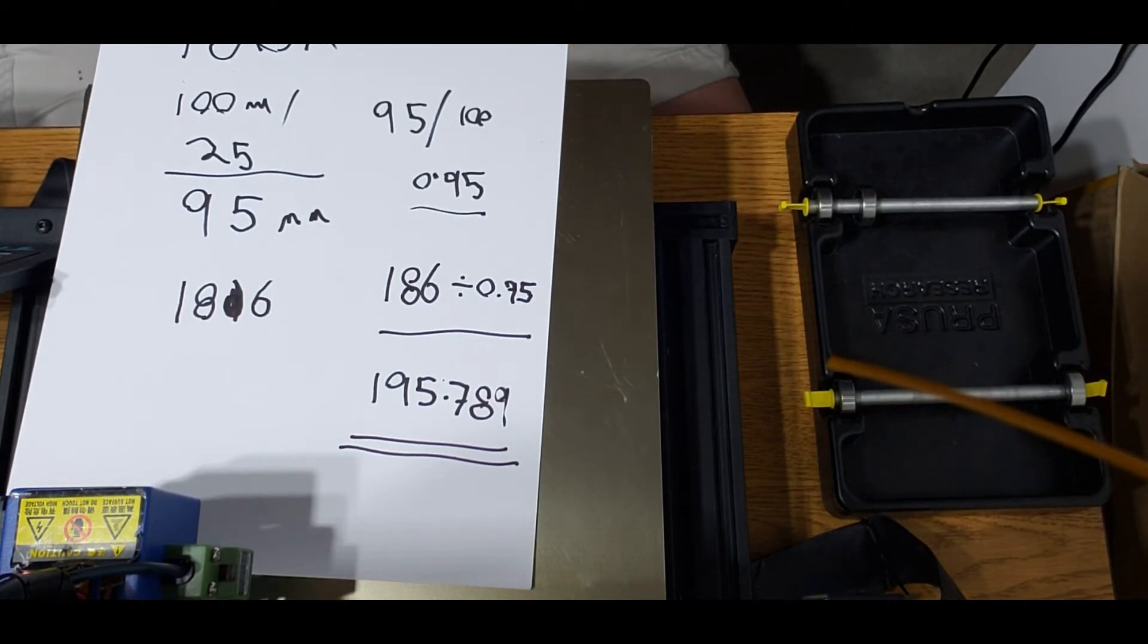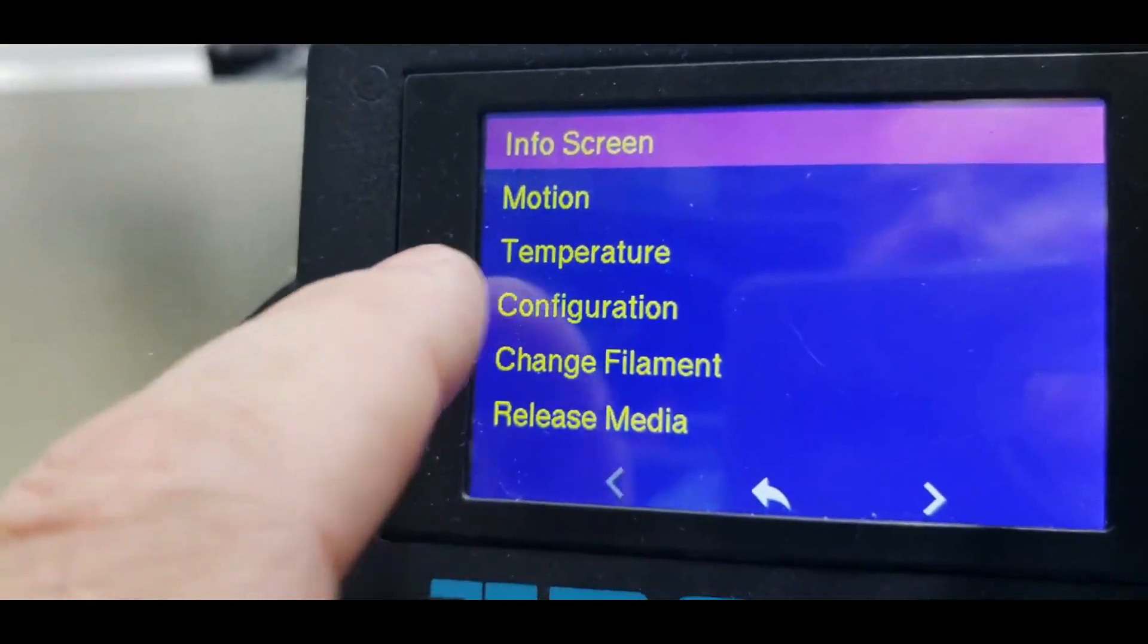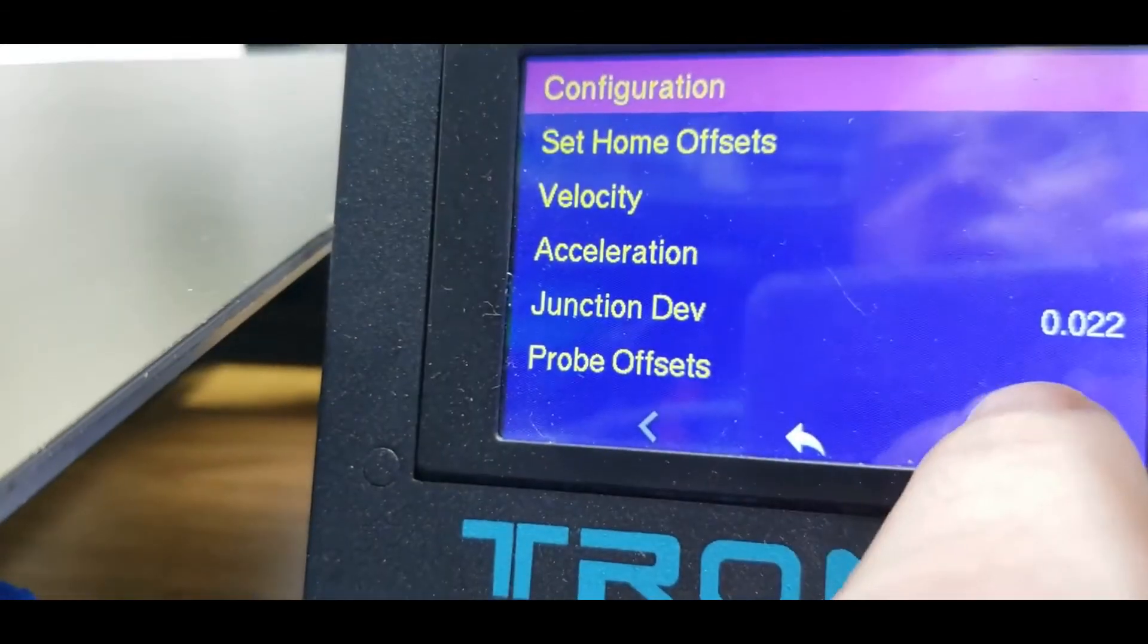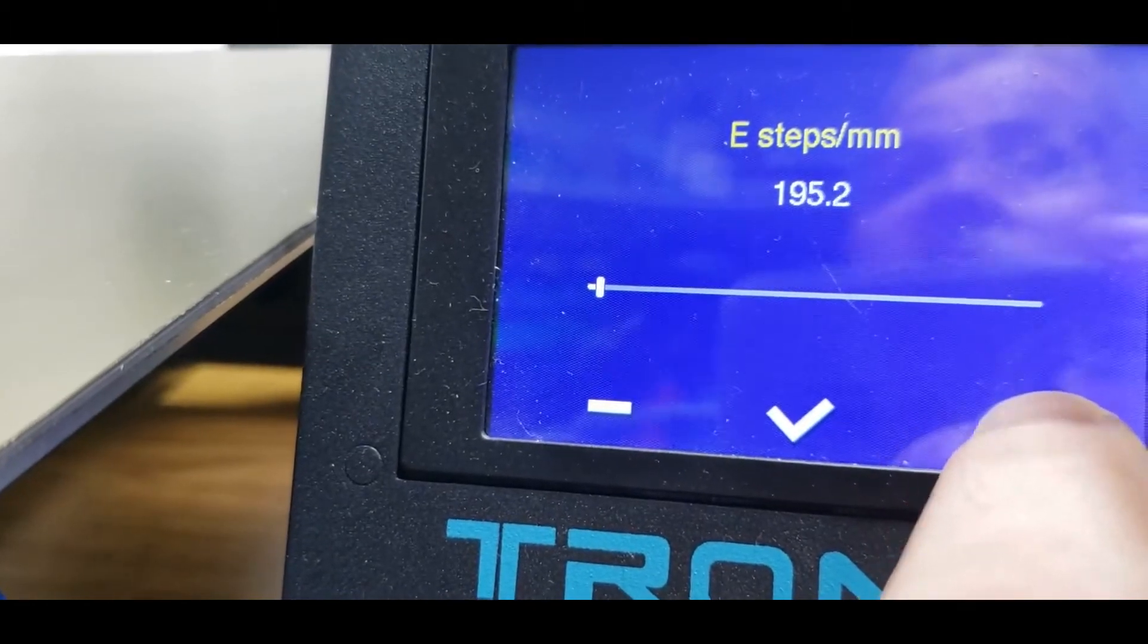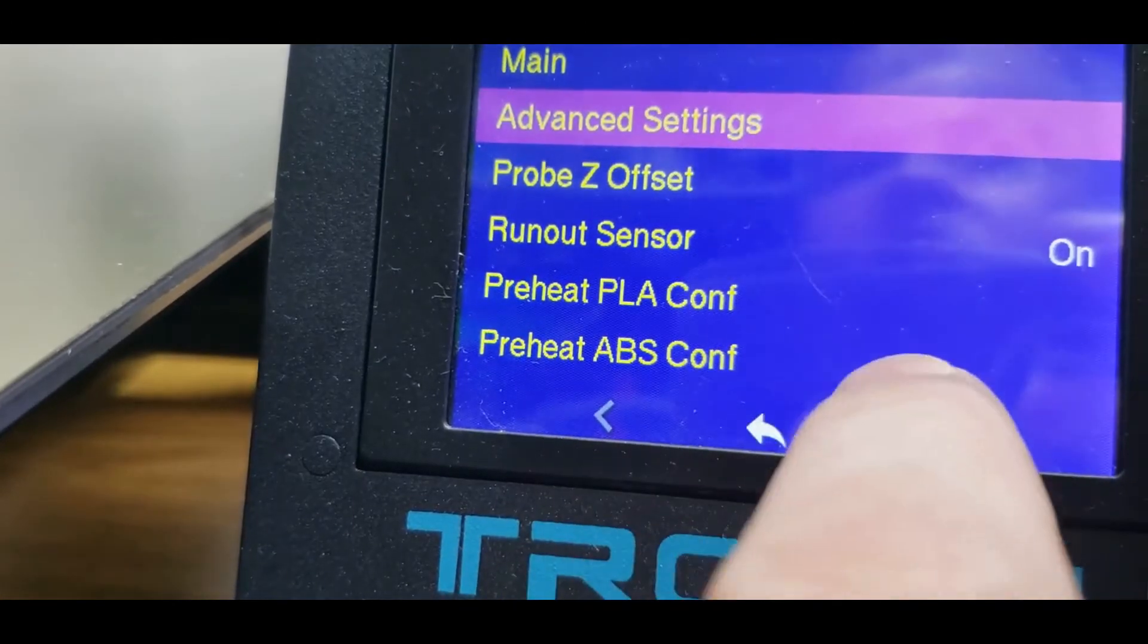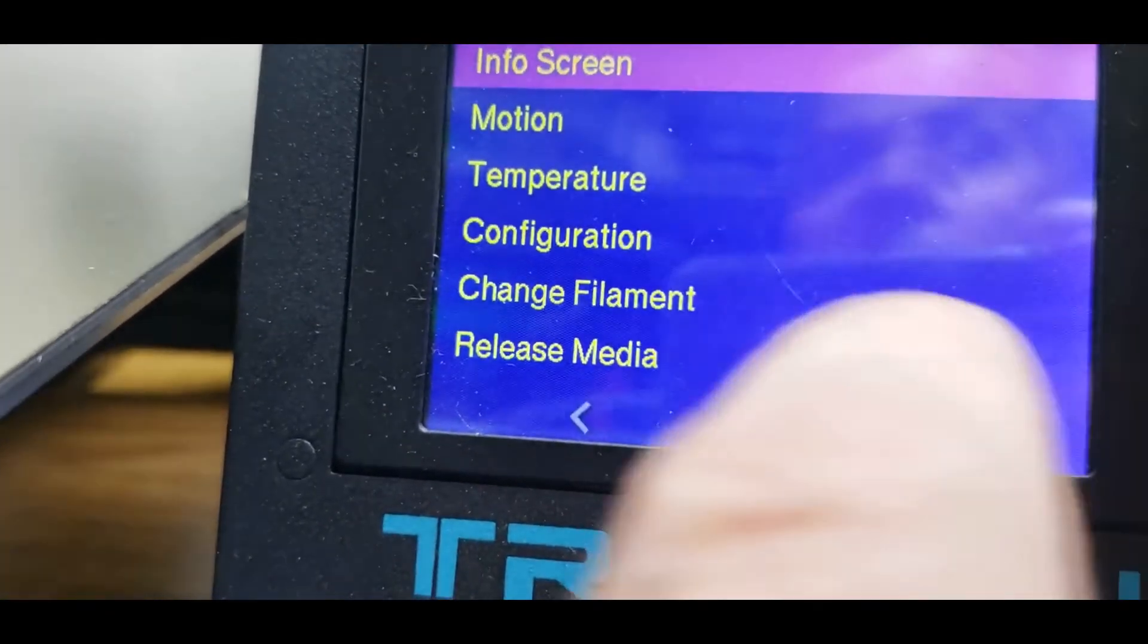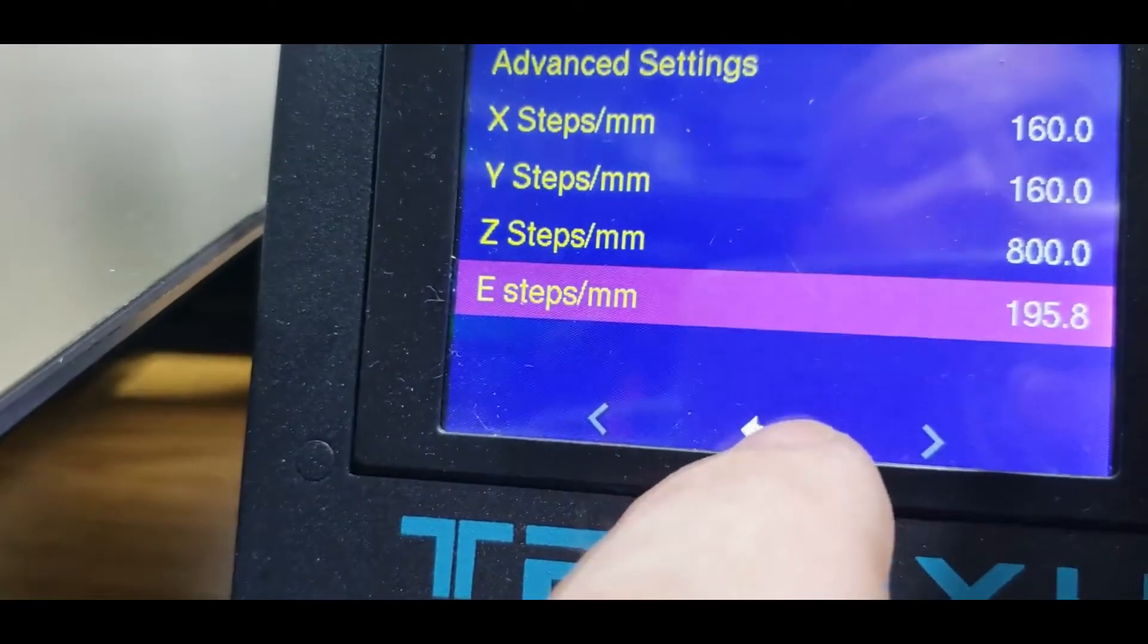Now I'm simply going to insert our new E-steps into the printer. Advanced, Steps Per Mil, and we're going to increase this to 195.8. Then we're going to store our settings. We'll go back just to make sure our new value is in there. Configuration, Advanced Settings, Steps Per Mil, E-steps 195.8. We're good to go.